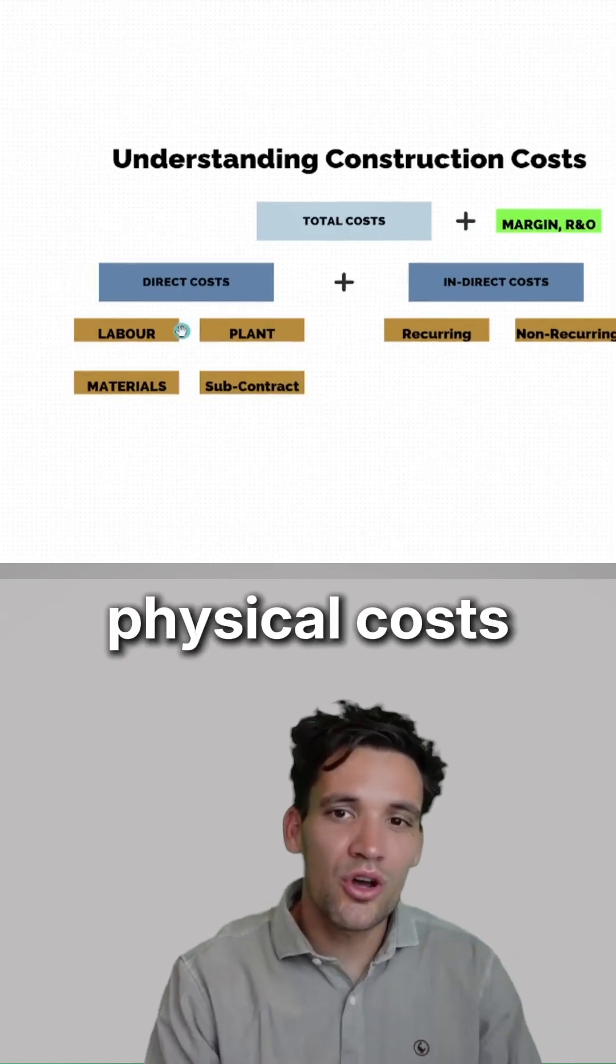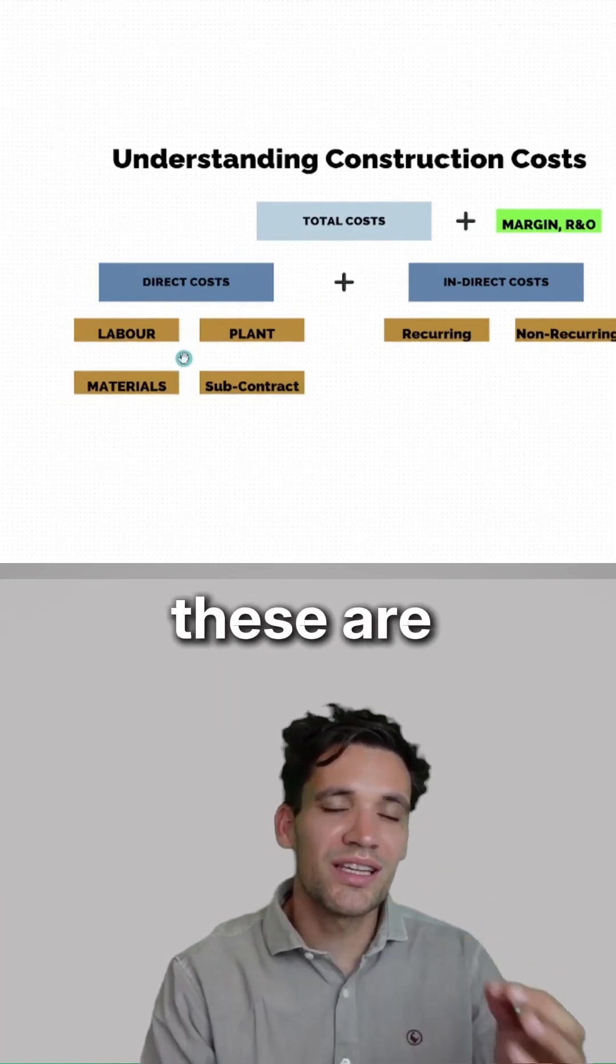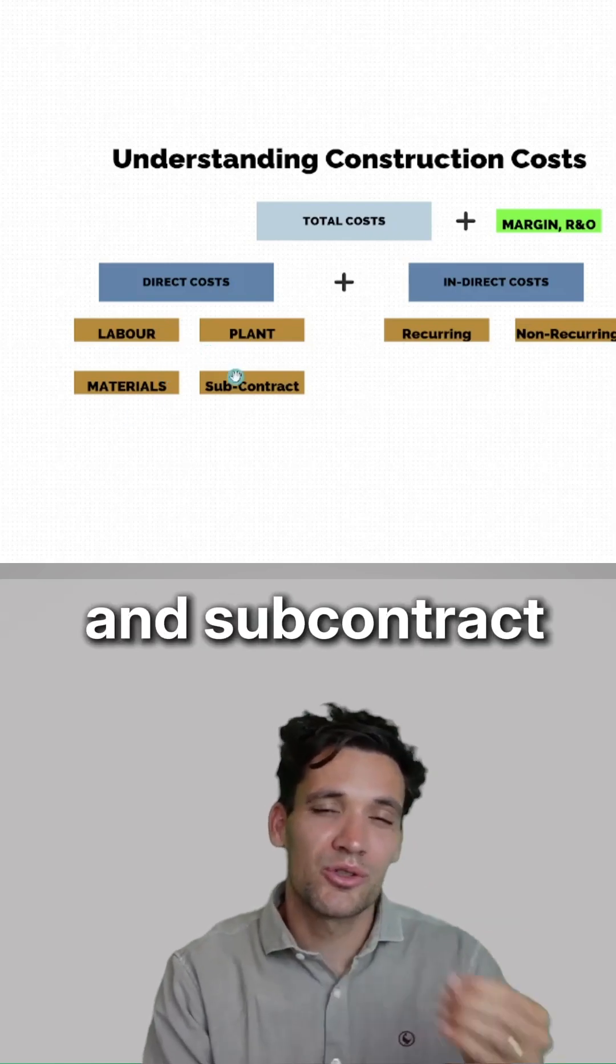Our direct costs are the physical costs of building a construction project. These are made up of four components: labor, plant, materials, and subcontract.